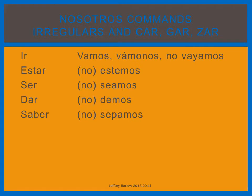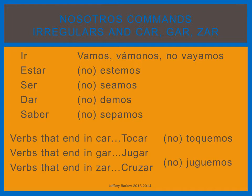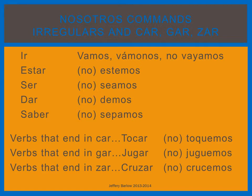Verbs that end in -car, -gar, -zar also present a problem. When we add the E of -emos, the opposite ending for AR verbs, it changes the sound. So for verbs ending in C-A-R, for example, tocar becomes toquemos with Q-U-E-M-O-S. Jugar becomes juguemos with G-U-E-M-O-S. And cruzar becomes crucemos with C-E-M-O-S.